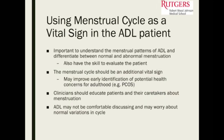The last part of this lecture is using the menstrual cycle as a vital sign in the adolescent patient. It's really important to understand what's normal in terms of menstrual patterns and what's abnormal. The menstrual cycle should be an additional vital sign — just like blood pressure and pulse, you should ask a reproductive-age woman the first day of her last menstrual period. It can be a reflection of overall health and help with differential diagnosis including pregnancy.